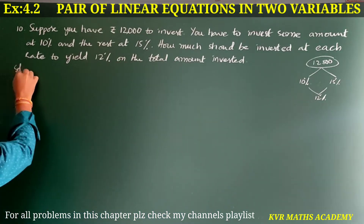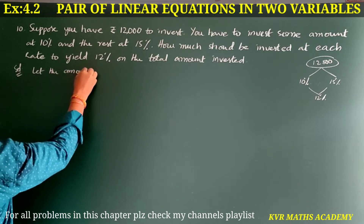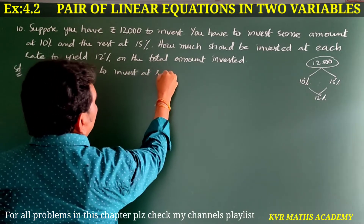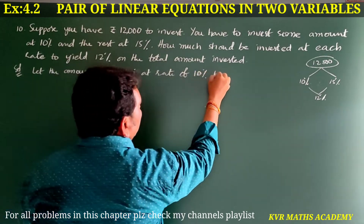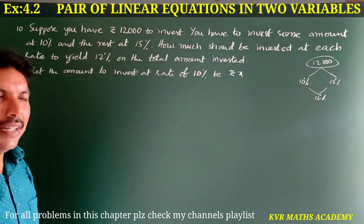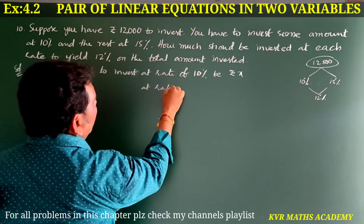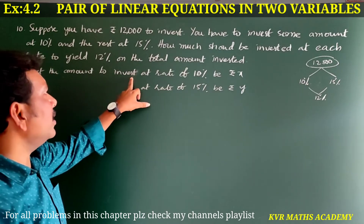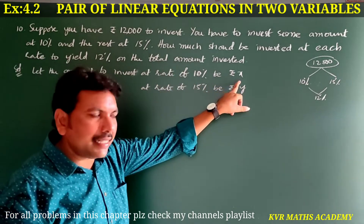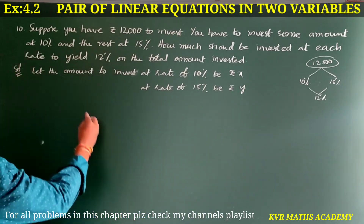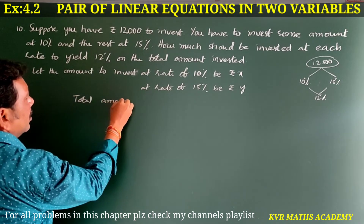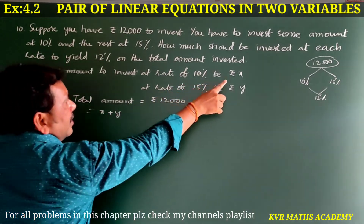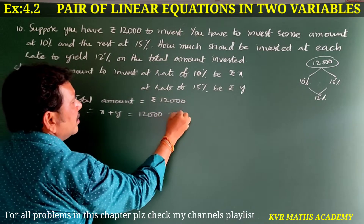Let the amount to invest at a rate of 10% be rupees X, and the amount at a rate of 15% be rupees Y. Total amount equals 12,000 rupees. Therefore X plus Y is equal to 12,000. This is equation number 1.